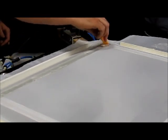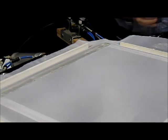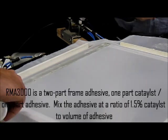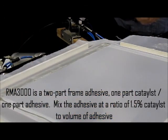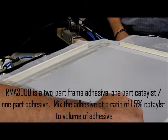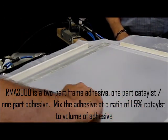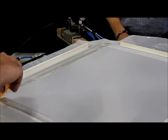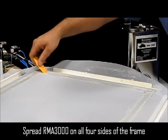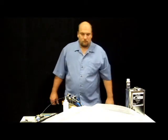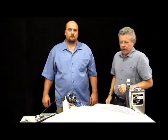You'll notice that we have two parts to this. We have our glue and we have a catalyst. So we mix that prior. The catalyst actually, the primary function of that is so that it gives us good solvent resistance.